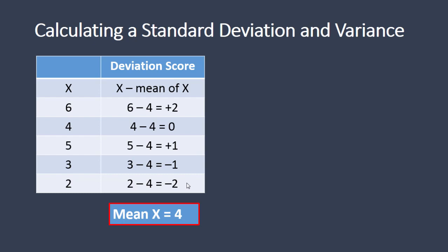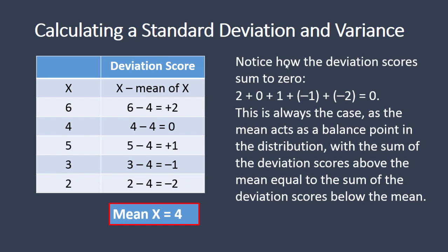If you add up all of these, they sum to 0. Now that's always the case with deviation scores. When we add these values up — positive 3 and negative 3 — they always equal 0. The reason this is always the case is because the mean acts as a balance point in the distribution, with the sum of the deviation scores above the mean equal to the sum of the deviation scores below the mean. If you calculate deviation scores and find that they don't add up to 0, then a mistake was made and you should double-check your work.